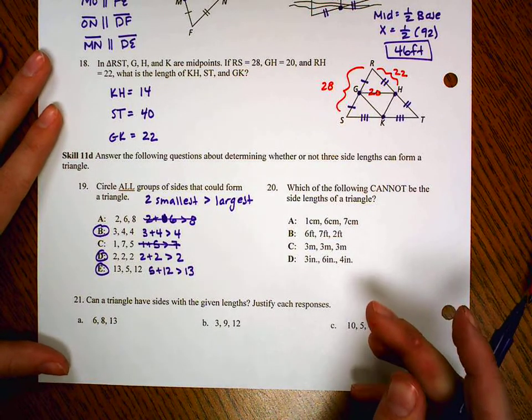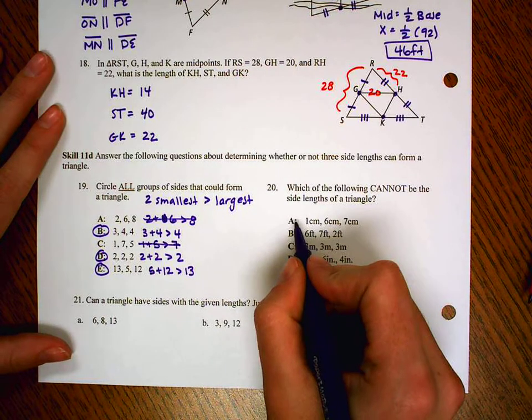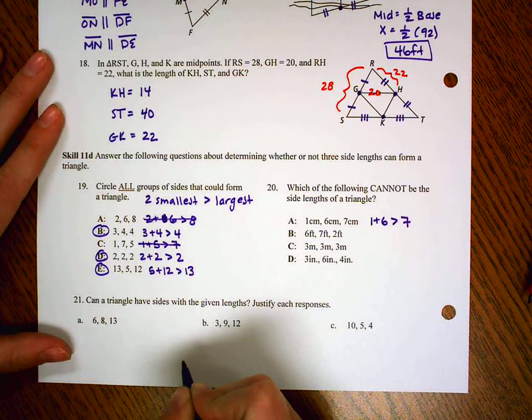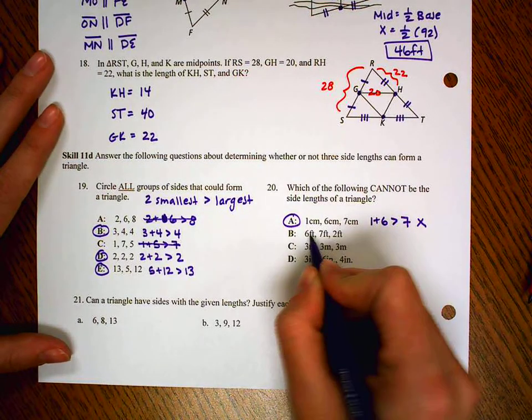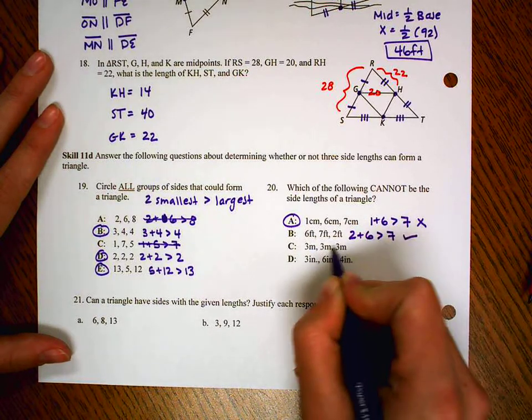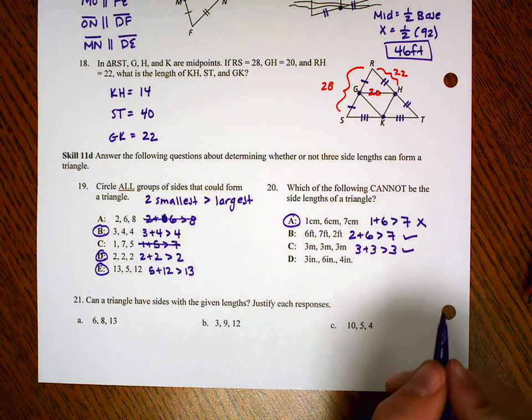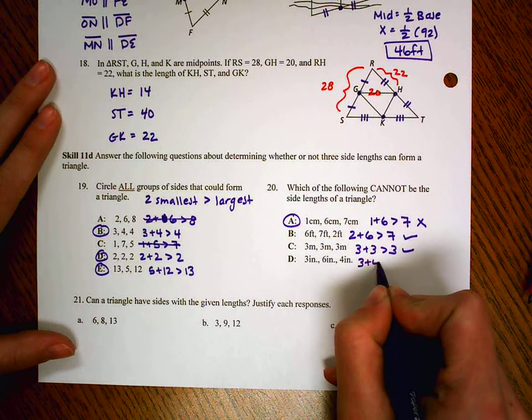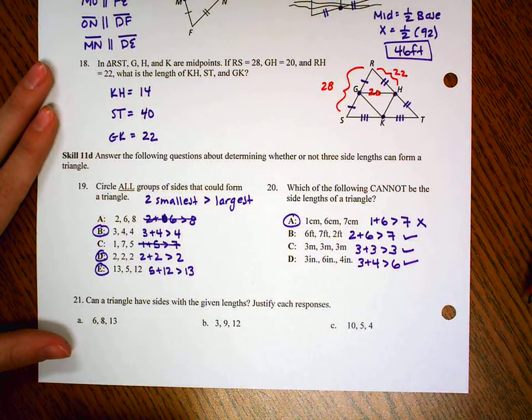Number 20. Which of the following cannot be the side lengths of a triangle? So we're looking for the one that does not work. Well, for A, we've got 1 plus 6. Is 1 plus 6 bigger than 7? Well, no, it's not. So it looks like that's going to be our answer, but we need to check the rest. The two smallest are 2 and 6. 8's bigger than 7. 7's bigger than 7. 3 and 3 together are bigger than 3. And 3 and 4 are bigger than 6. 7's bigger than 6. So yep, that's the only one that doesn't work.